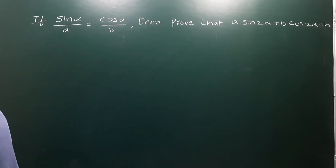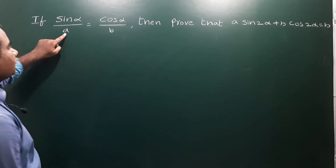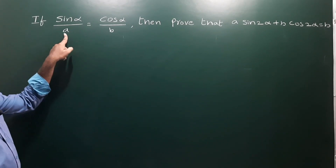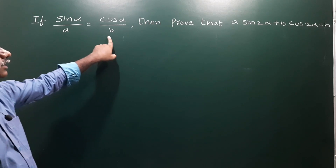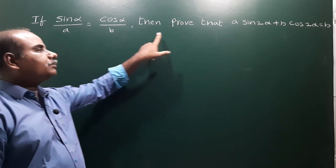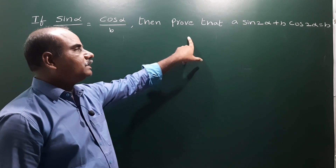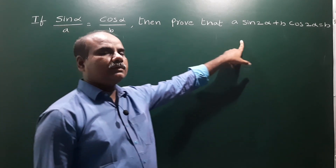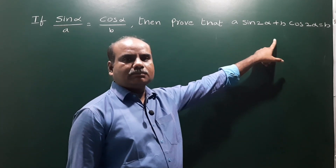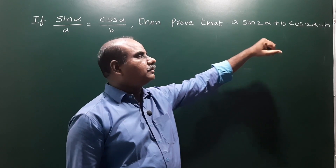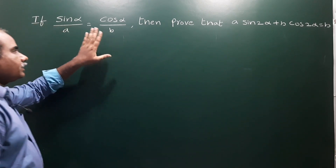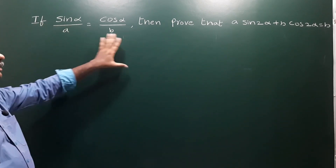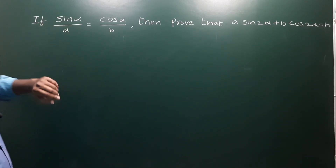Next problem: if sinα/a is equal to cosα/b, then prove that a·sin2α + b·cos2α is equal to b. So given the condition, we need to prove the result.